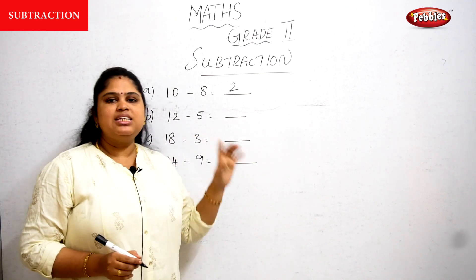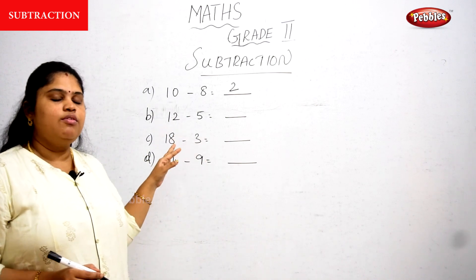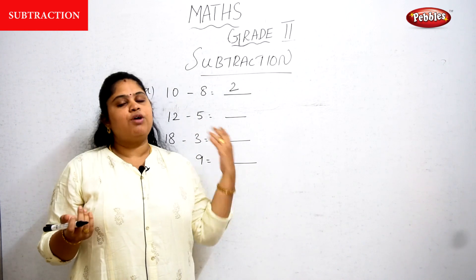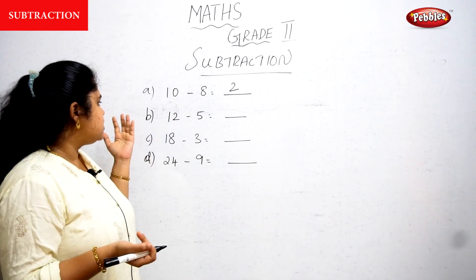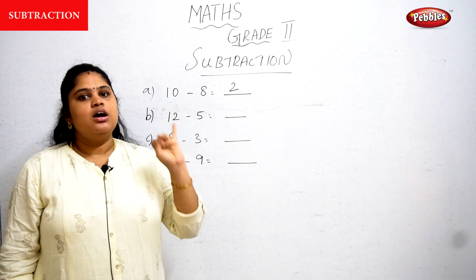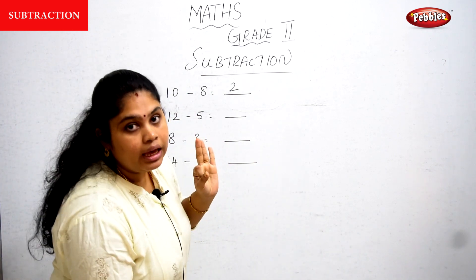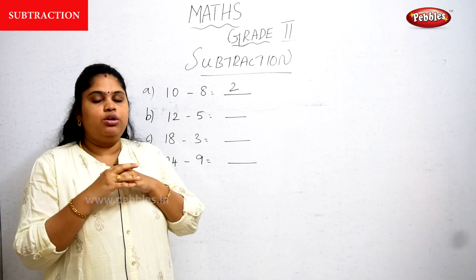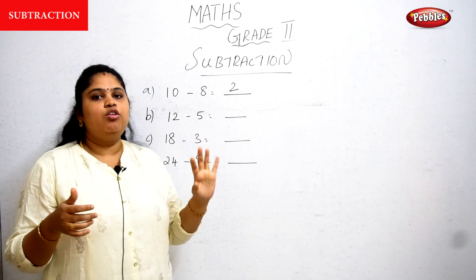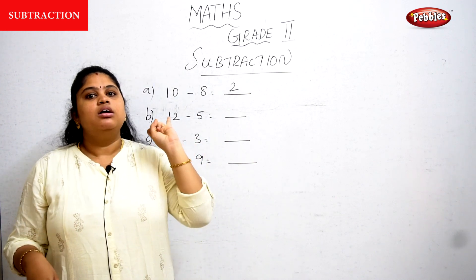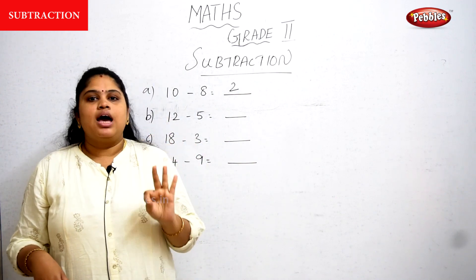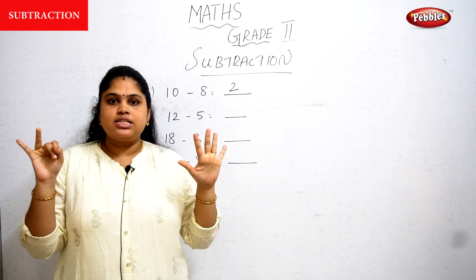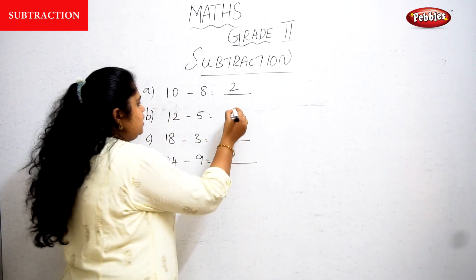Next, question B: 12 minus 5. From where do you want to start backward counting? From 12, counting back 5 steps: 11, 10, 9, 8, 7. So 7 fingers are left. The answer is 7.